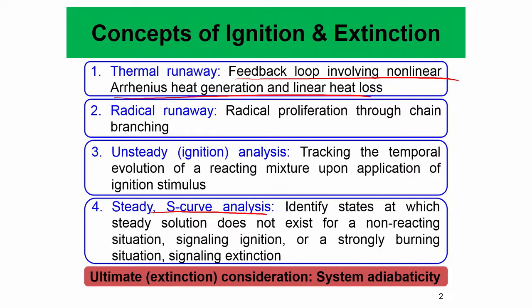This is caused by the system adiabaticity — if you do not have heat loss, even a small amount of energy supplied will guarantee ignition. But we do not deal with such ideal adiabatic systems. In a gas turbine engine, a nozzle gives out a spray which atomizes; the spray breaks up into droplets, which evaporate and form a gas cloud that mixes with local air. Then an igniter such as a spark ignites it, forming a small ignition kernel with high temperature.